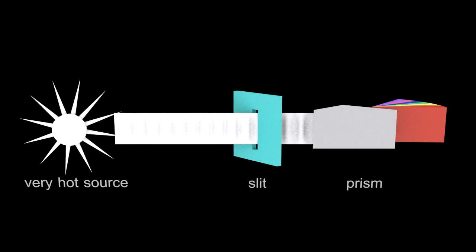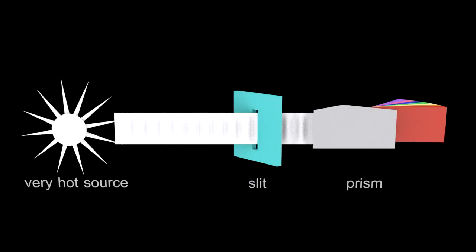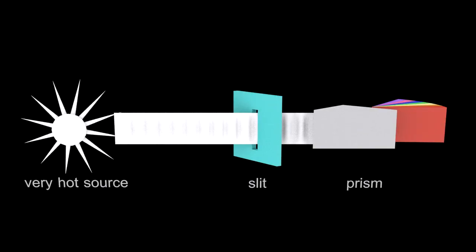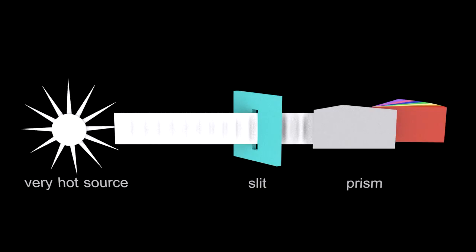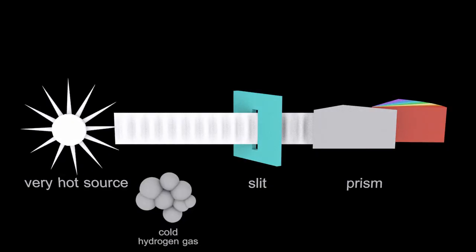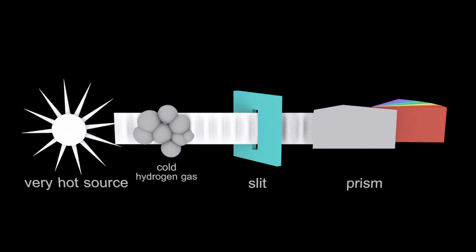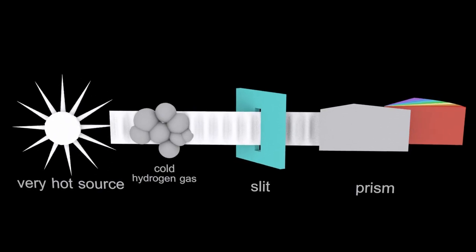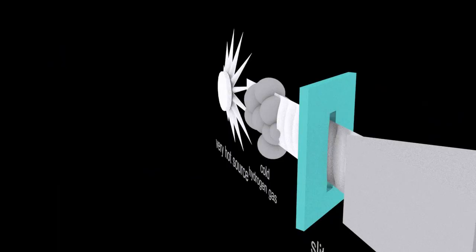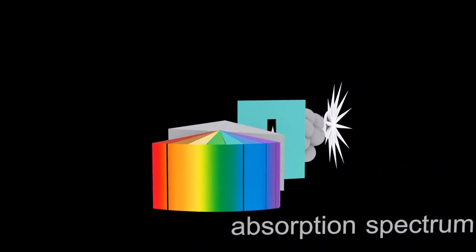If we rewind and pop a cold gas between the source and the slit, hydrogen gas in fact, the hydrogen gas will absorb some of that radiation, some of that electromagnetic radiation, leaving you with an absorption spectrum which is a continuous spectrum with selected wavelengths removed.